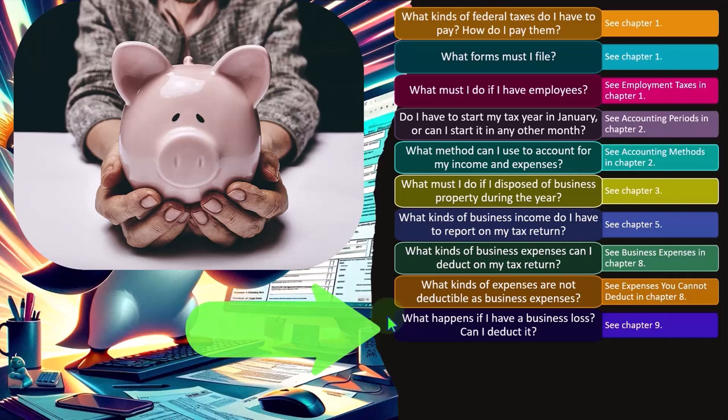Now, you might be able to do that. So you might be able to say, if I had a loss, I might be able to take that loss against other income.